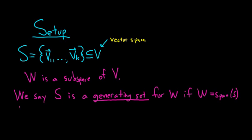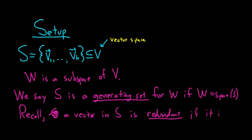Also recall, I don't think I ever wrote this down so I will for the first time. A vector in S is redundant if it is a linear combination of other vectors in S. We talked about this before in a previous video. So for example, the zero vector is always redundant. You can always just drop it from the span.